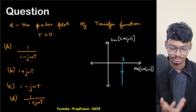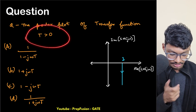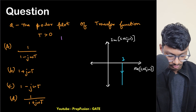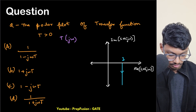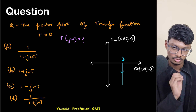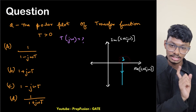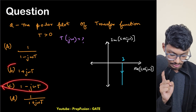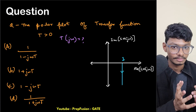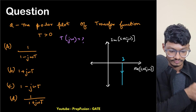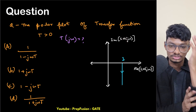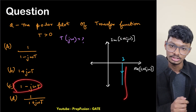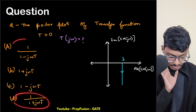This first question is pretty simple. The polar plot of a transfer function is given for t greater than zero, and you have to identify the transfer function. Just by observation, you can see that the real part is always constant. But in which direction are we heading? The phase angle is negative here — if I increase omega I'm going in the negative direction. These two options give a positive phase angle direction.